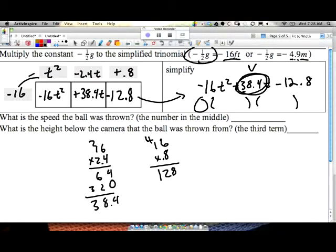So what speed was the ball thrown? At 38.4 feet per second. Why seconds? Because we were measuring our time in seconds. And what does this represent? Negative 12.8. That means we were about 12.8 feet below the camera.